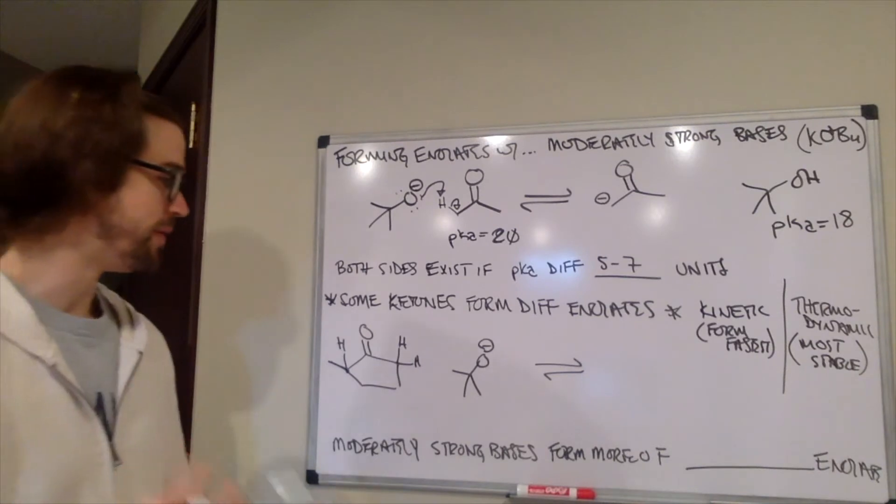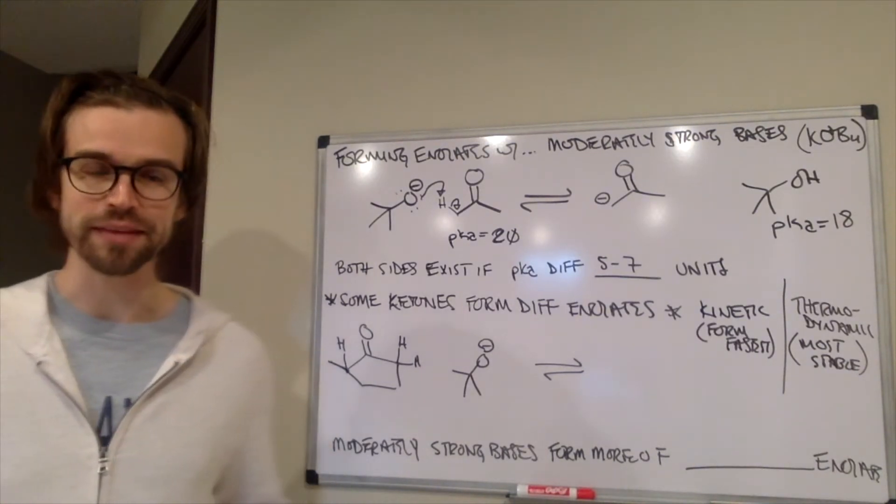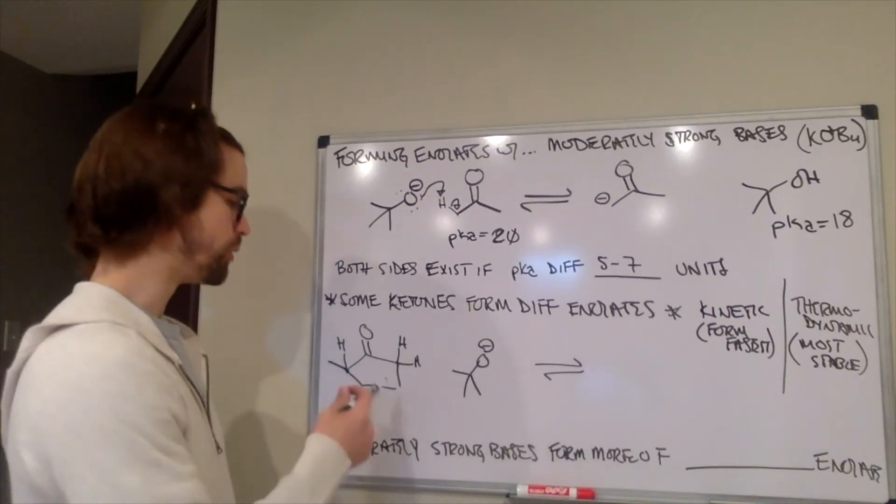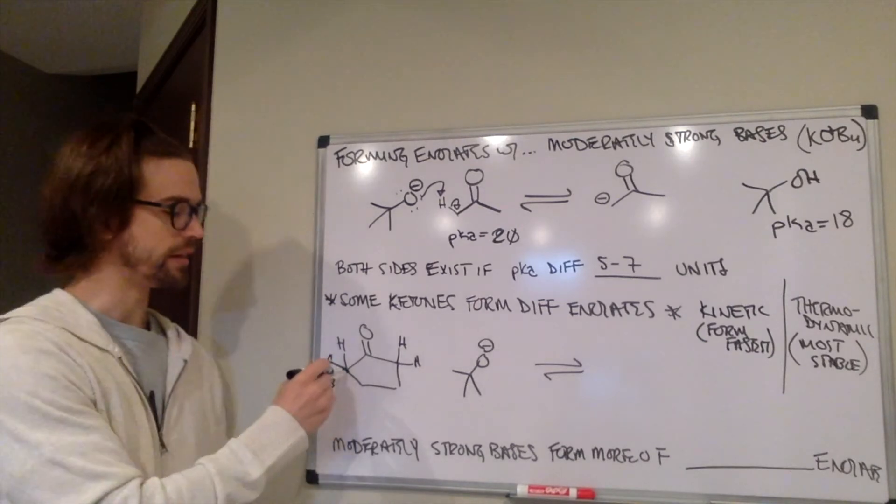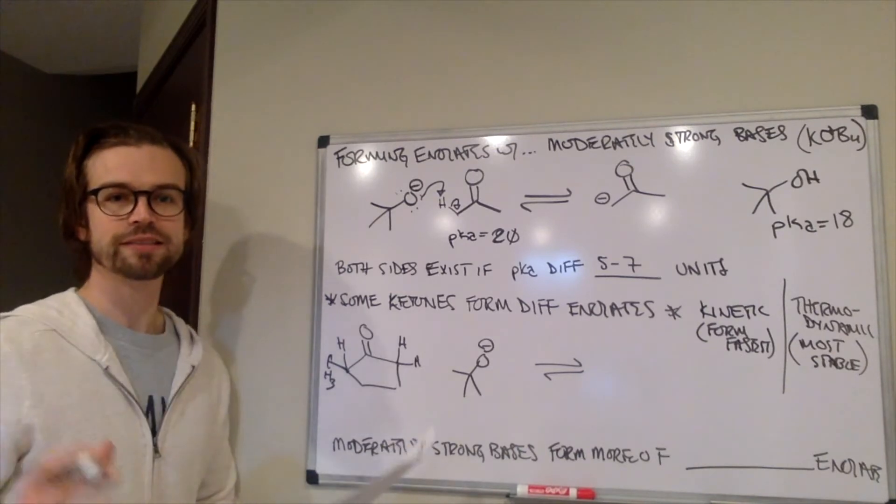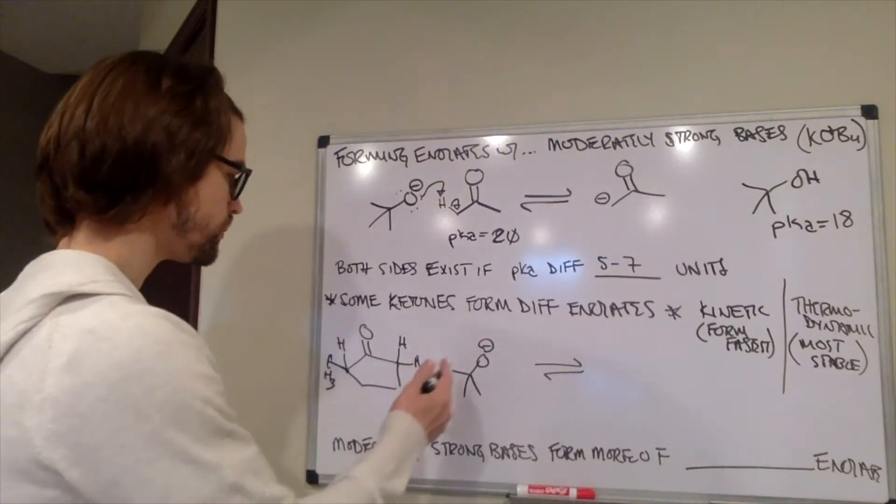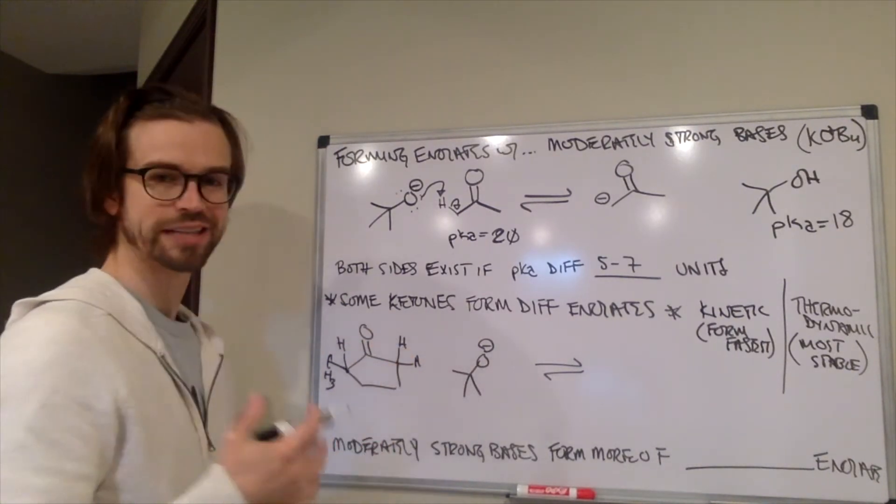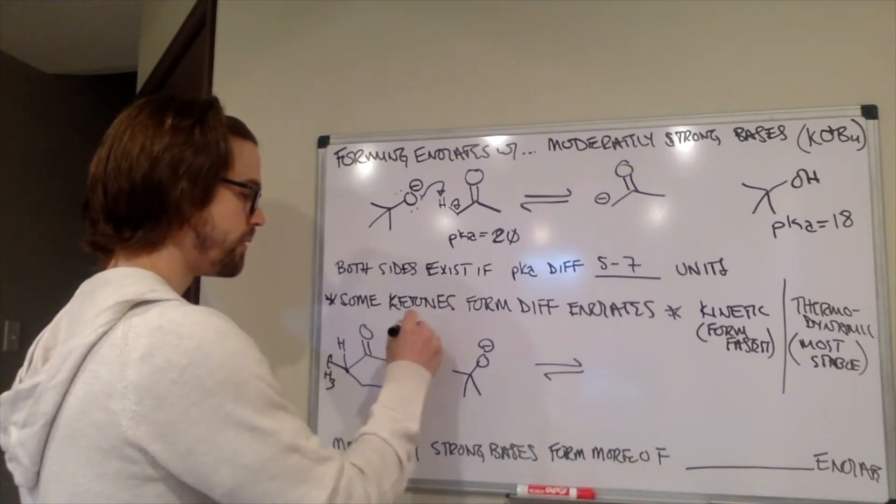Okay, you did that. So, the faster deprotonation is going to be the one that the base is able to get to easier, right? And which side is going to be easier to get to? Well, this side has a big CH3 surrounding that H, and then these other carbons. Essentially there's a lot of stuff crowding that side, whereas these two Hs are kind of just more accessible. So, this is going to be able to deprotonate these more sterically accessible hydrogens at a faster rate. So, this would be the faster side.